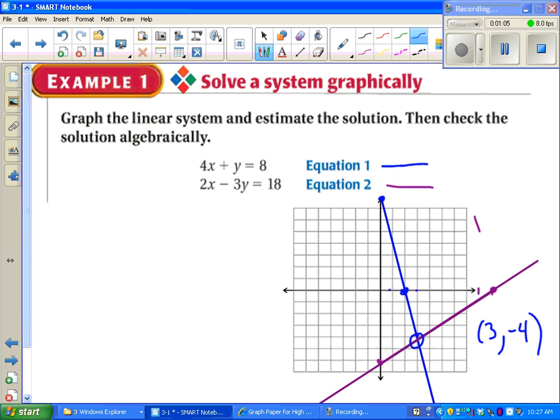We can check that. In fact, the directions tell us to. We check the solution algebraically by plugging these numbers into both equations. In equation 1, we go 4 times 3 plus negative 4 should equal 8. 12 minus 4 is 8, so that works.